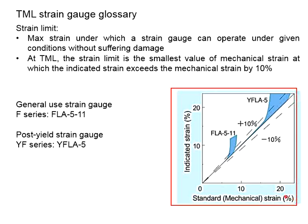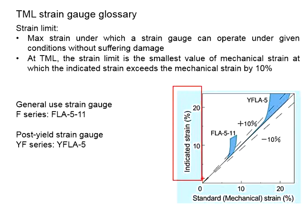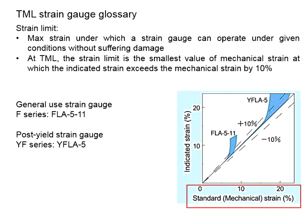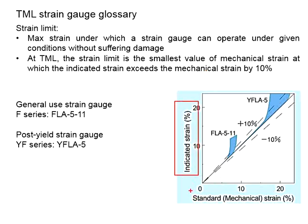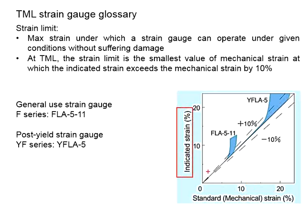Let us look at this diagram. The y-axis represents the indicated strain, and the x-axis represents the mechanical strain — this is the actual strain, and this is the measured value. If your measured value is totally identical to the actual situation, the line would be 1 to 1. For example, if the actual strain is 10% and the strain gauge measures accurately, the indicated strain should also be 10%. This is the most ideal situation, though there may be some variations as nothing is perfect.